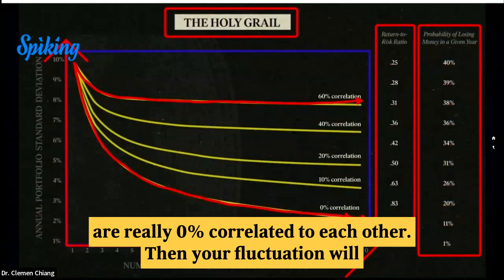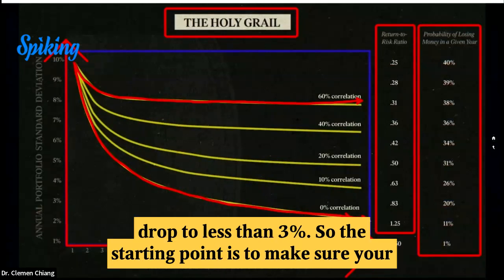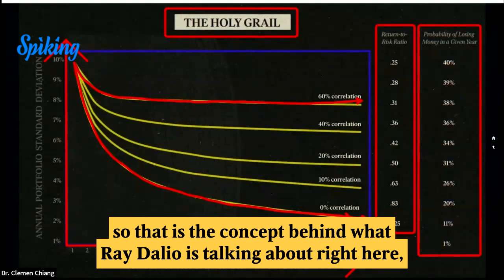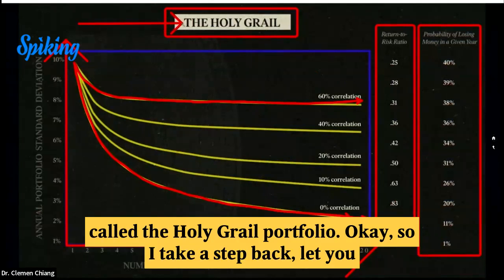Then your fluctuation will drop to less than 3%. So the starting point is to make sure your fluctuation is really very low, and then your upside can be unlimited. That is the concept behind what Ray Dalio is talking about right here — the holy grail portfolio.